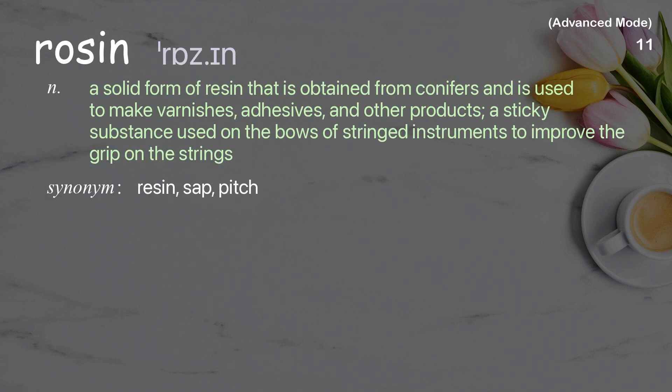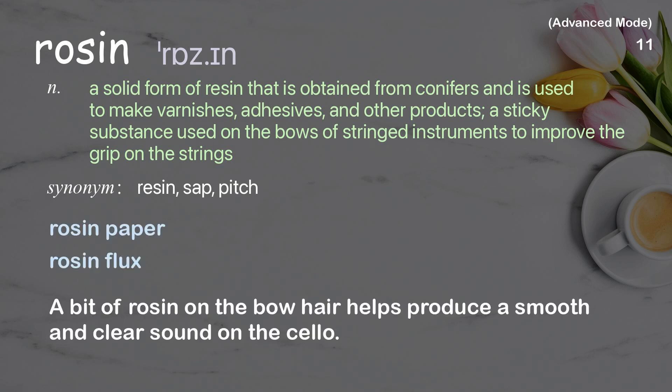Rosin: a solid form of resin obtained from conifers, used to make varnishes, adhesives, and other products; also a sticky substance used on the bows of stringed instruments to improve grip on the strings. Examples: rosin paper; rosin flux. A bit of rosin on the bow hair helps produce a smooth and clear sound on the cello.